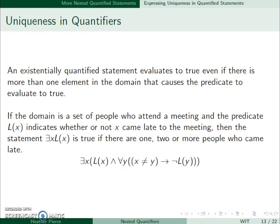So this is how we'll represent uniqueness: ∃x L(x) and ∀y (x ≠ y → ¬L(y)). So basically what this is saying is there is a person that was late, and everyone else was not late.